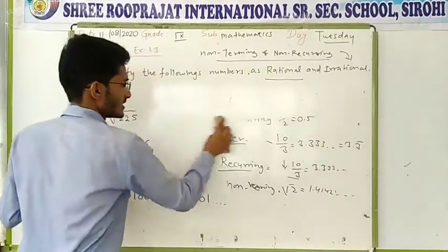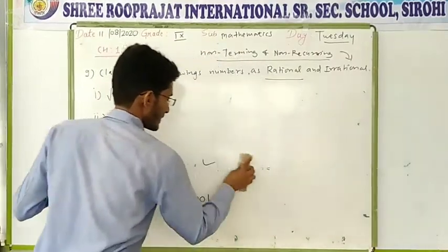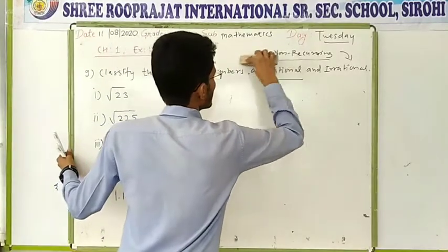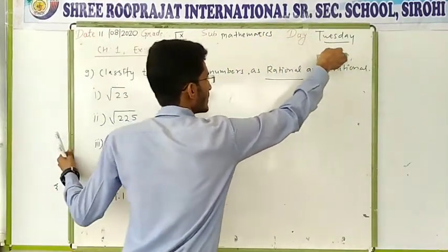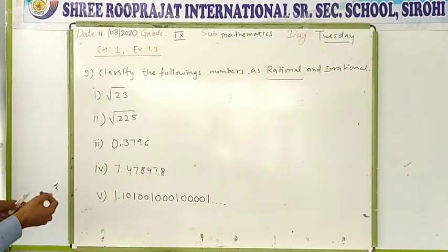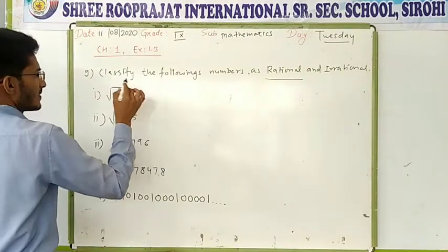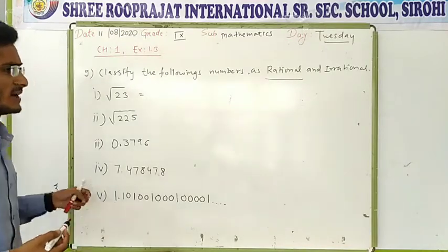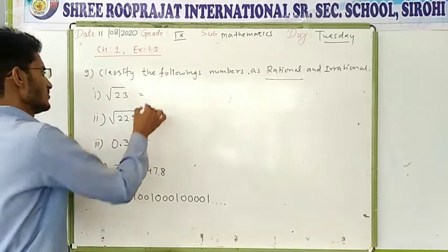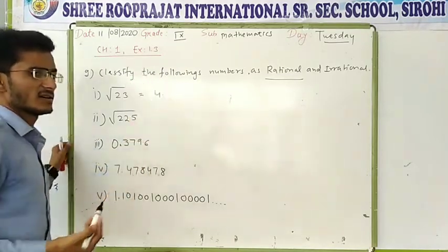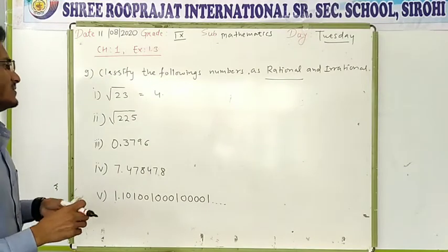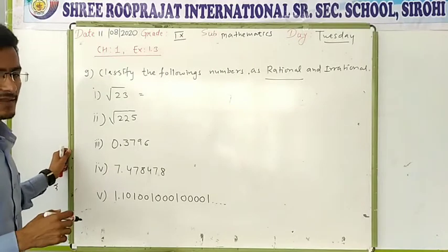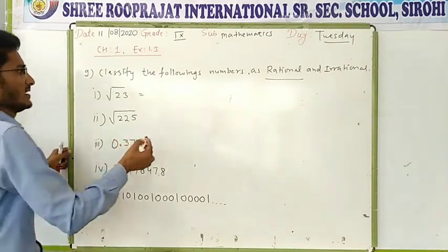So move to the question now. First one: root 23. We try to find out the root value of 23. We get that it is non-terminating and non-recurring — we get around 4 point something. The number is not repeating and you will never get an end, that means you will never get zero as a remainder. So it is an irrational number.